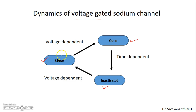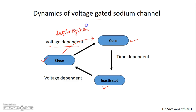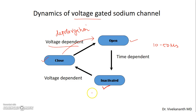From the closed state to go to the open state, it requires a change in membrane potential. Whenever there is a depolarization in the membrane, it goes from closed state to open state, and immediately after opening — after 10 to 50 microseconds — it goes to a state called the inactivated state.